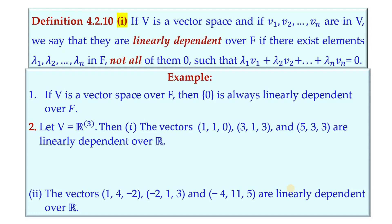If there exist elements λ1, λ2, ..., λn in F, not all of them zero, such that the linear combination is zero — we do not require all of them to be zero, but yet the linear combination is zero — then we call v1, v2, ..., vn to be linearly dependent.